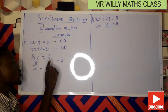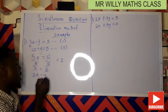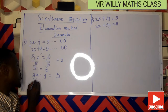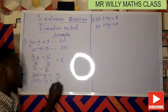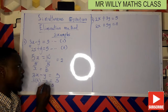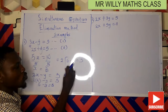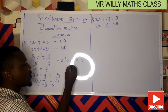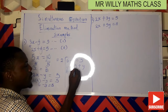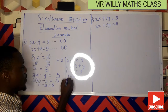Now we solve for y by going back to equation one and substituting x equals 2. Equation one says 3x minus y equals 5, so that becomes 3 times 2 minus y equals 5, which is 6 minus y equals 5. Moving y to the right side gives 6 equals 5 plus y, then moving 5 to the left gives 6 minus 5 equals y. So y equals 1.